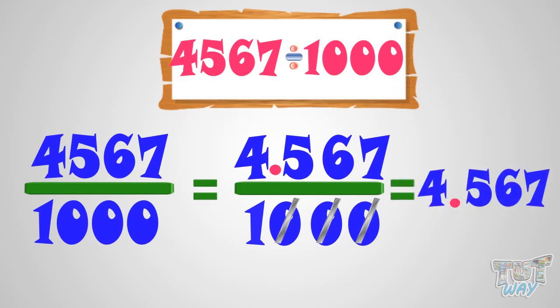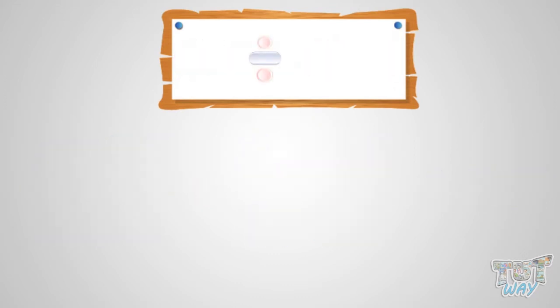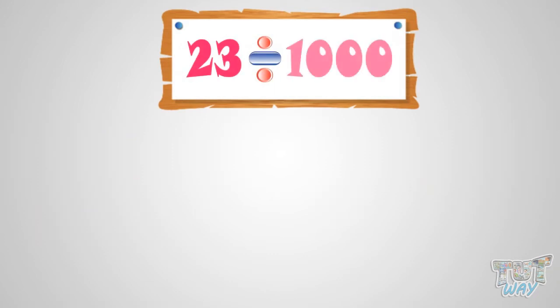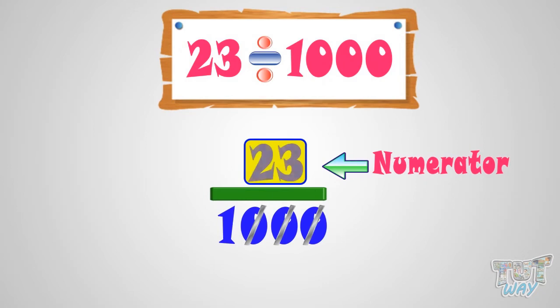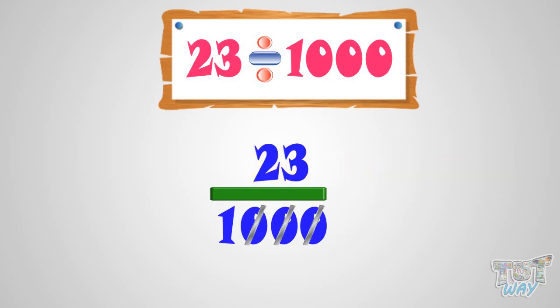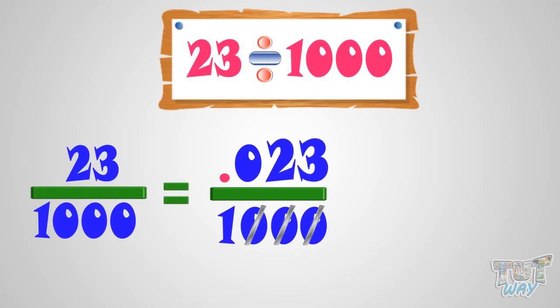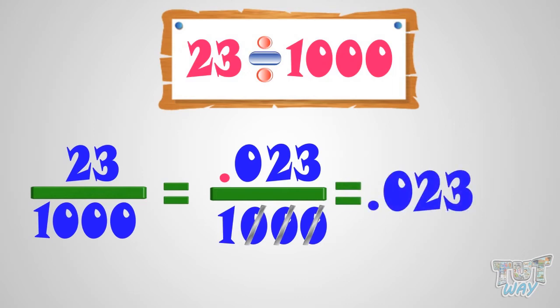Now let's take another example. How do we divide 23 by 1000? To cut the three zeros of the denominator, we need to put a decimal after three digits from the right in the numerator. But we don't have three digits in the numerator. In that case, put a zero at the leftmost place in the numerator — as putting zeros to the left of a number does not change the number — so make it 023. Now put a decimal after three digits from the right, and we are left with 0.023 by 1 equals 0.023. So, 0.023 is our answer.